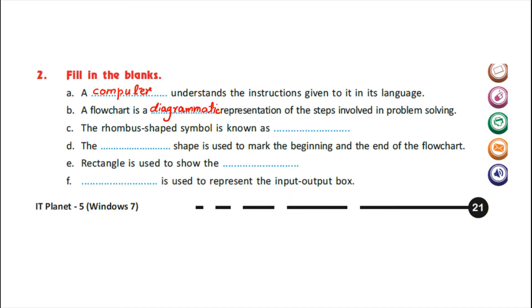C) The rhombus shaped symbol is known as — write here: decision box.